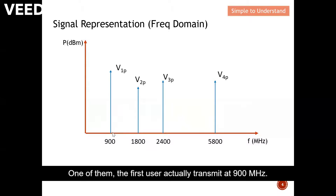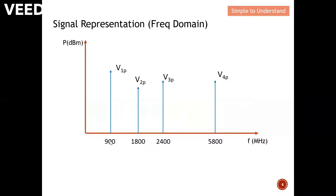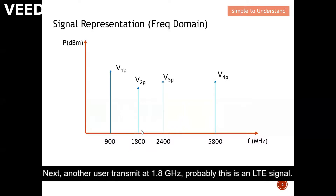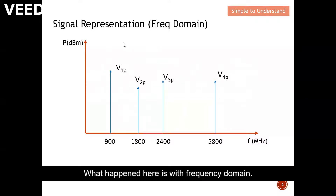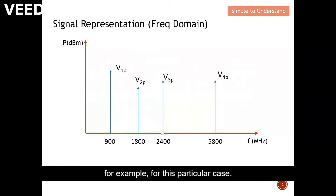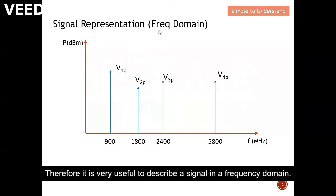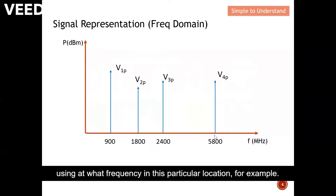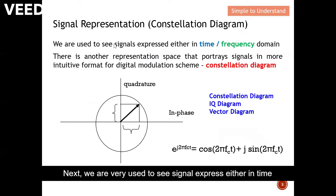From this diagram you can see there are four main users in this room. The first user transmits at 900 MHz — probably a 3G signal. Another transmits at 1.8 GHz — probably an LTE signal. You also see 2.4 GHz, likely a Bluetooth user, and 5.8 GHz, probably a Wi-Fi user. The frequency domain lets you easily see how many users are operating at which frequency.